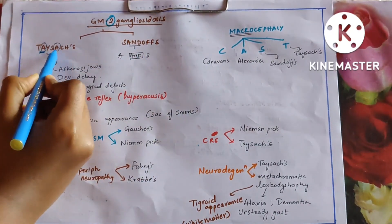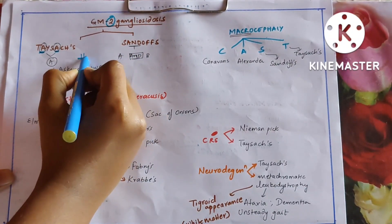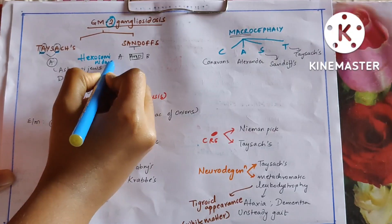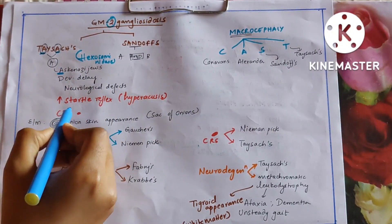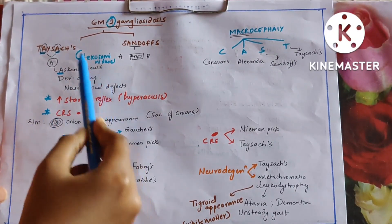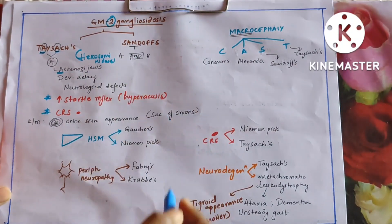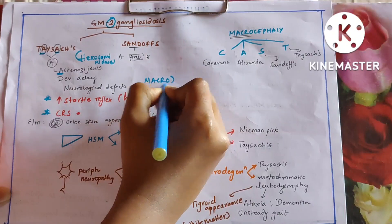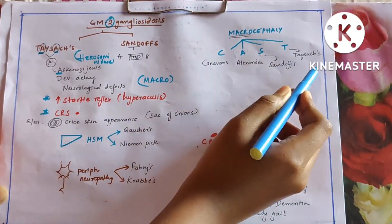Two diseases left: Tay-Sachs and Sandhoff's — these together come under GM2 gangliosidosis, due to hexosaminidase deficiency. Tay-Sachs has only hexosaminidase A; it is present in Ashkenazi Jews, with developmental delay, neurological defects, and increased startle reflex (hyperacusis) — that is the clincher word. Cherry red spot is seen. Tay-Sachs presents with macrocephaly.